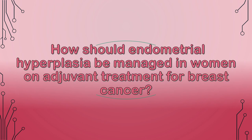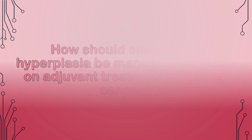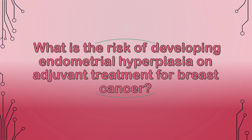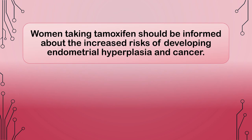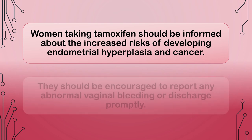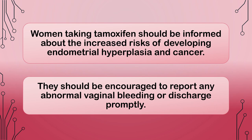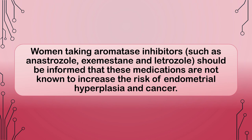How should endometrial hyperplasia be managed in women on adjuvant treatment for breast cancer? Women taking tamoxifen should be informed about the increased risk of developing endometrial hyperplasia and cancer and encouraged to report any abnormal vaginal bleeding or discharge promptly. Women taking aromatase inhibitors such as anastrozole, exemestane, and letrozole should be informed that these medications are not known to increase the risk of endometrial hyperplasia and cancer.